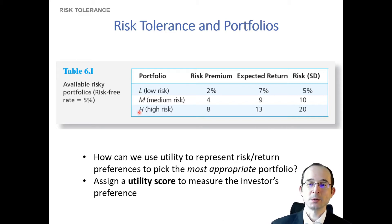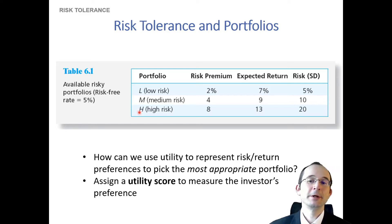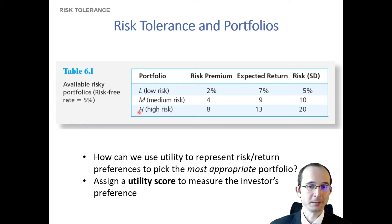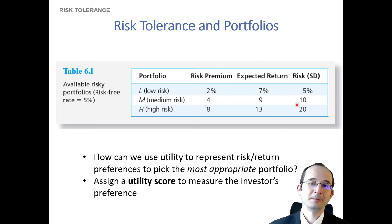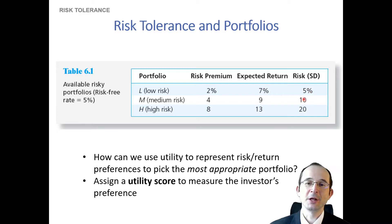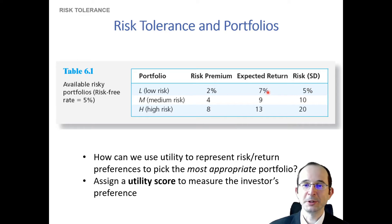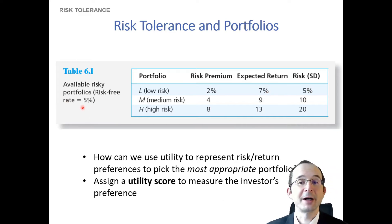These portfolios, as we learned in the modeling returns discussion, can be characterized fairly completely with two statistical quantities. We need their average payoff and their riskiness of the payoff — so the mean return and the standard deviation of returns. We can calculate the risk premium as the difference between the mean and a risk-free rate. In this case, let's assume a risk-free rate of 5%.